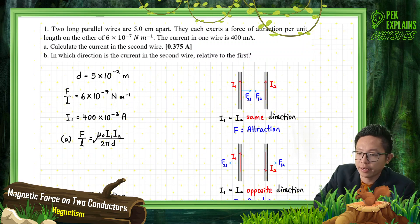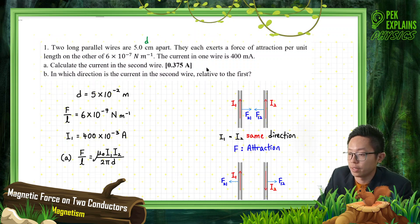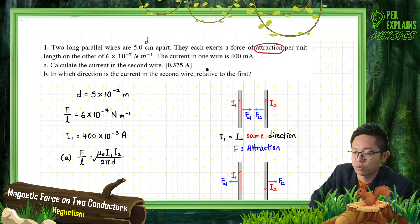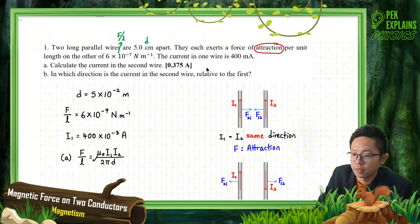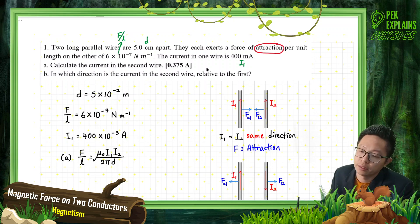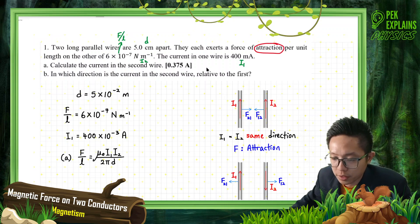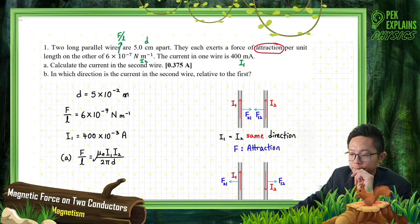Looking at the given information: we have the separation between the two wires, and the force of attraction — the word 'attraction' here is very important. We also have the force per unit length in N/m, and the current in one wire, which we call I1, equal to 400 mA. We need to find I2, the current in the second wire.